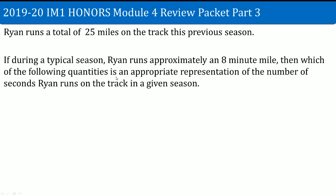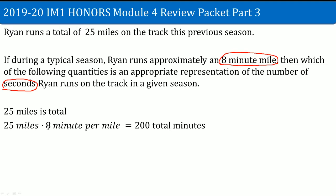Next, here is the scenario: Ryan runs a total of 25 miles on this track in his previous season. In a typical season Ryan runs approximately an 8-minute mile. Which of the following quantities is an appropriate representation of the number of seconds Ryan runs in a given season? The issue here is that the question asks for seconds but the information is given in minutes, so you need to convert. The total is 25 miles; 25 miles times 8 minutes per mile gives 200 total minutes.